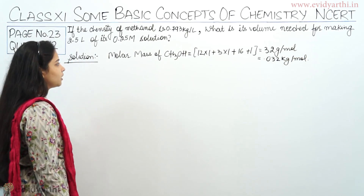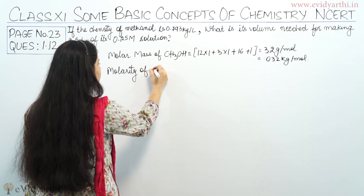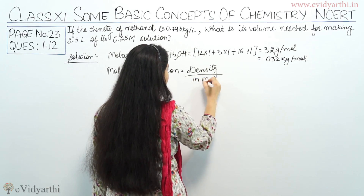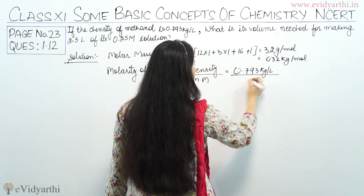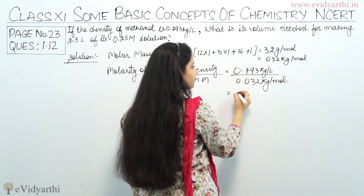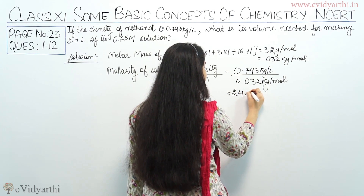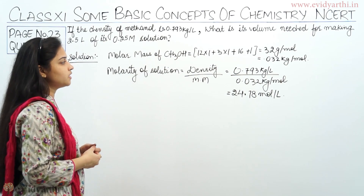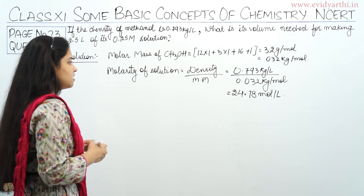Now we will calculate the molarity of the solution. Molarity equals density divided by molecular mass. The density given is 0.790 kg per litre divided by 0.032 kg per mole. The molarity comes out to be 24.78 moles per litre. So we have calculated the molar mass as 0.032 kg per mole and the molarity as 24.78 moles per litre.